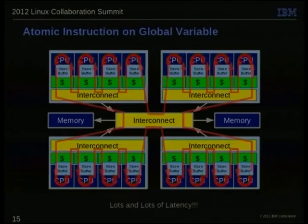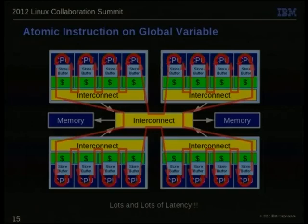If you have a whole bunch of CPUs doing an atomic increment on the same variable, that variable has to go running around the machine. It's not going to go faster than the speed of light, and it's going to take a long time. The more CPUs you have, the longer it takes — meaning if you add CPUs to your machine, it'll run slower. And if I add CPUs, I kind of want it to go faster.